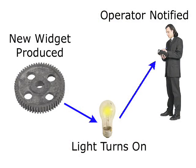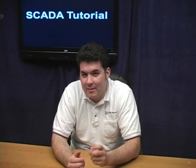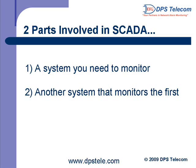Here's an example of the world's simplest SCADA system. Imagine a fabrication machine in a factory that produces widgets. Every time the machine finishes a widget, it activates a switch that turns on a light, telling the human machine operator that a widget has been made. A full-scale SCADA system just monitors more stuff over much greater distances. All you need are the system or machinery you want to monitor and control, and a data collection system made up of sensors and control outputs.